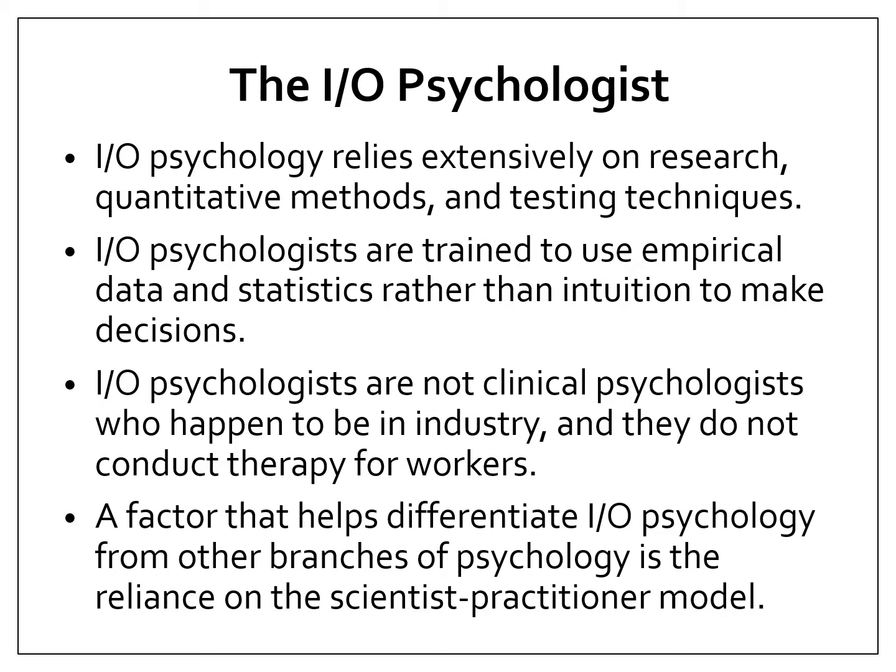I/O psychologists are not in charge of therapy — they are not there to help with drug abuse problems. They can refer employees to someone with counseling skills or to a psychologist, but therapy is not within the I/O psychologist's definition. A key factor that differentiates I/O psychology from other branches is the reliance on the scientist-practitioner model, meaning you fulfill your potential as a scientist — doing a lot of research — and the subject will be grounded in research evidence.